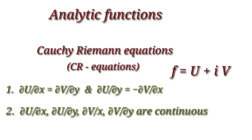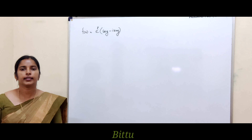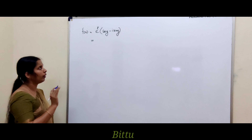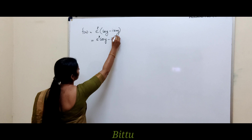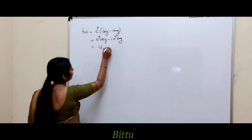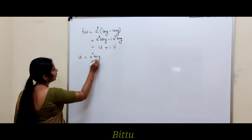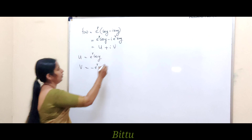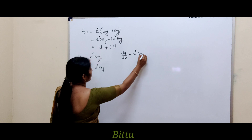Let me illustrate how to check whether a given complex function is analytic. The first example is already in the form u + iv: f = e^x cos y − i e^x sin y. So u = e^x cos y and v = −e^x sin y.